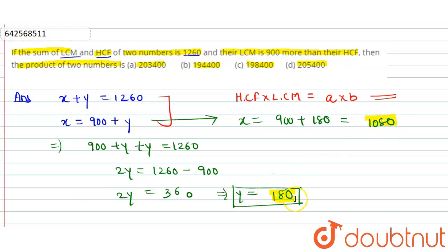The value of y is 180. We have found out this value. Now what we need to do is we need to find out the product of two numbers. So we'll just directly put it over here because the HCF into LCM is equal to a into b.